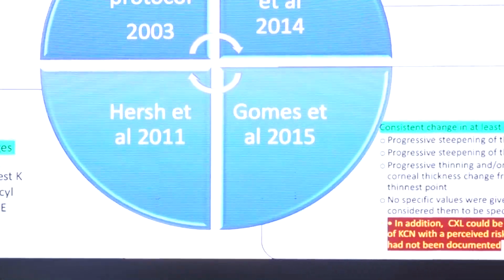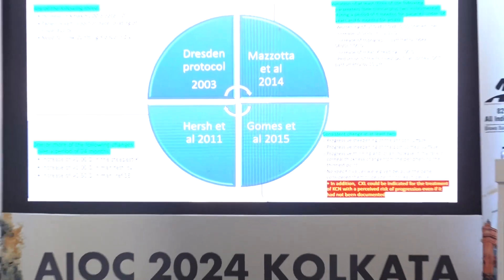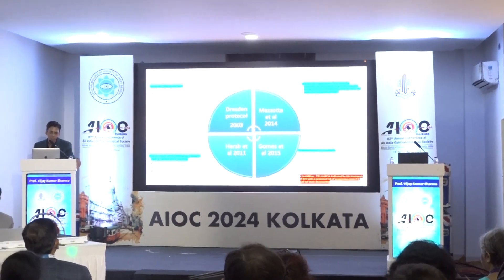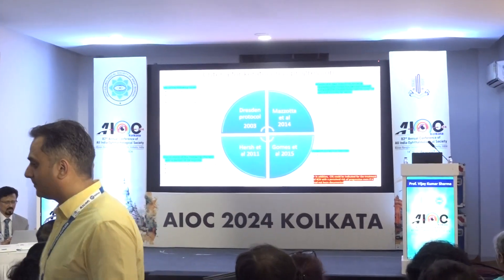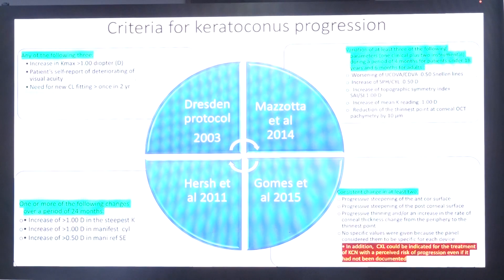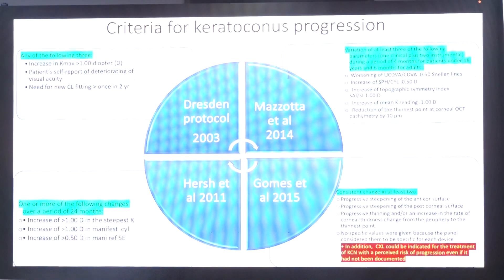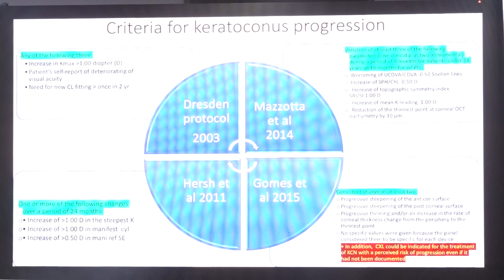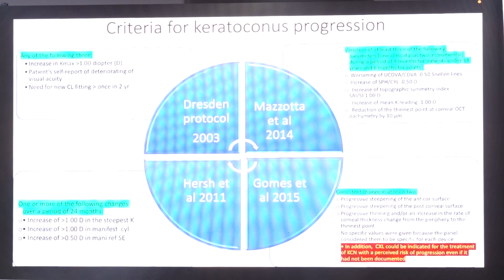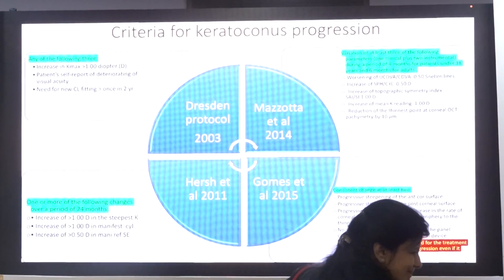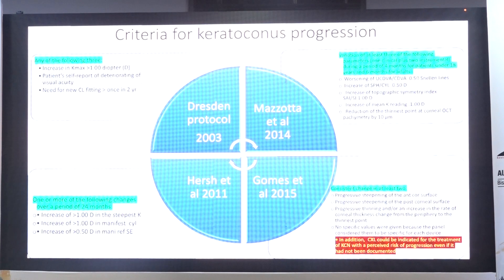Hirsch et al. in 2011 considered progression as an increase of more than one diopter in SimK, more than one diopter increase in manifest cylinder, or an increase of 0.5 diopter in manifest refractive spherical equivalent. Holmes et al. in 2015 noted that the types of Scheimpflug devices had expanded significantly, with different parameters for different devices. They proposed that there should be a consistent change in at least two of the following: progressive steepening of the anterior corneal surface, progressive steepening of the posterior corneal surface, and progressive thinning from center toward the periphery. They also stated that if there is a perceived risk of progression, CXL can be done without documentation.